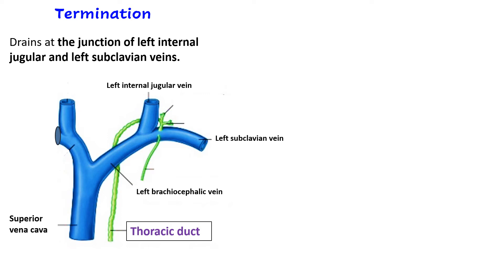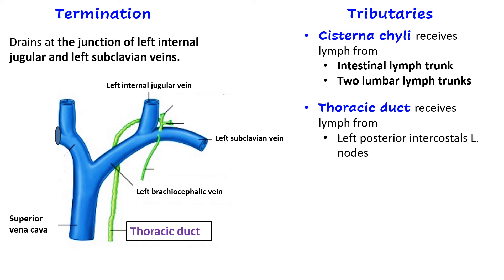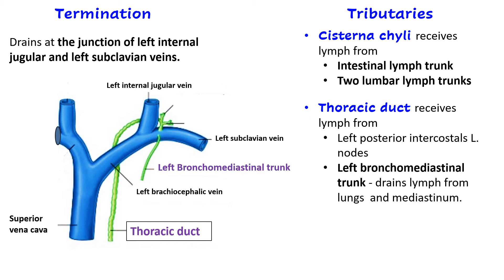Now let us look at the tributaries of the thoracic duct. First, the cisterna chyli tributaries — these are not direct tributaries of the thoracic duct but of the cisterna chyli itself. The cisterna chyli receives lymph from the intestinal lymph trunk from the gastrointestinal tract, and from two lumbar lymph trunks draining the abdominal wall and lower limbs. So the whole lymph from the lower half of the body below the diaphragm mostly enters the cisterna chyli.